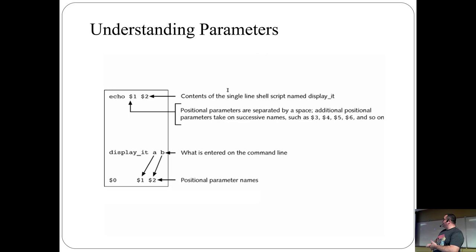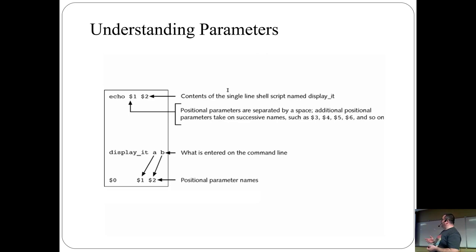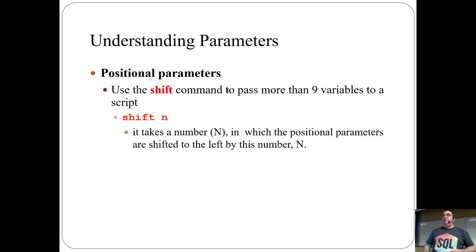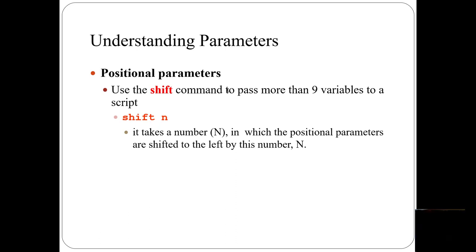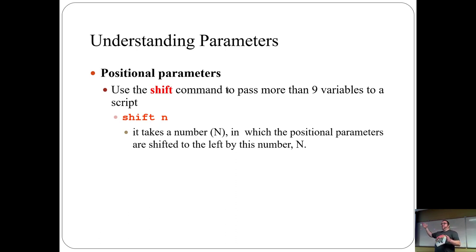The arguments work positionally. If you have a command called `display_it` and pass in A and B: `display_it` is `$0`, A is `$1`, B is `$2`. If you need more than nine arguments, use the `shift` command. `shift 5` slides the window so `$5` becomes `$1`, and arguments past nine become accessible as 6 through 9. You can keep shifting through the arguments in either direction.